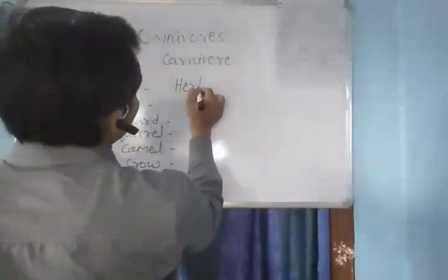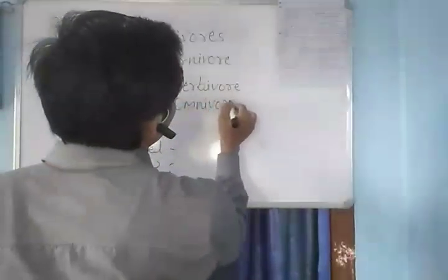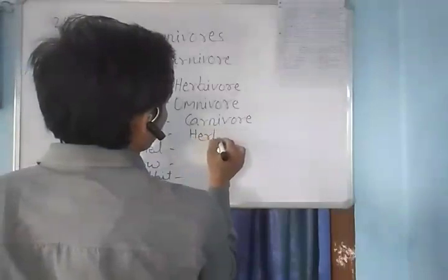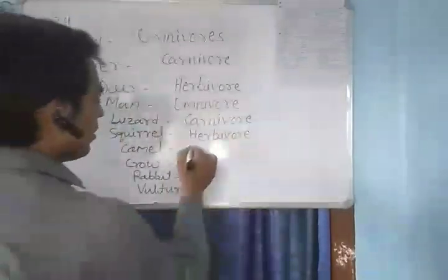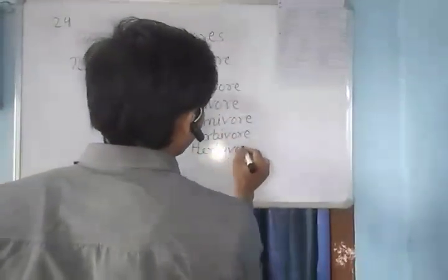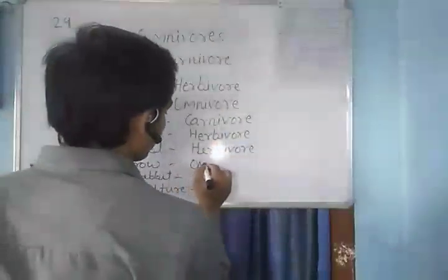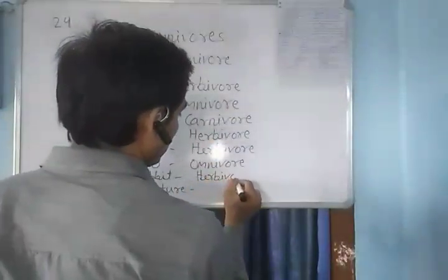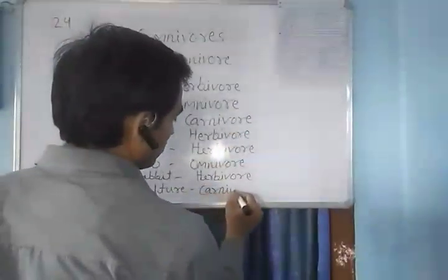Continuing question 24: squirrel — herbivore. Crow — omnivore. Vulture — carnivore. Camel — herbivore. Rabbit — herbivore.